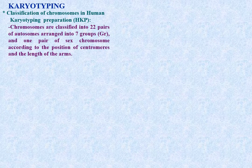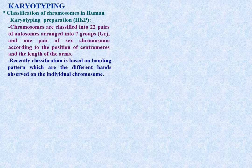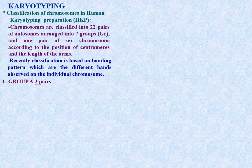Classification of chromosomes in human karyotype preparations: chromosomes are classified into 22 pairs of autosomes arranged in seven groups, and one pair of sex chromosomes, according to the position of centromeres and the length of the arms. Recently, classification is also based on banding patterns. Group A includes three pairs of long metacentric chromosomes - pairs 1, 2, and 3.